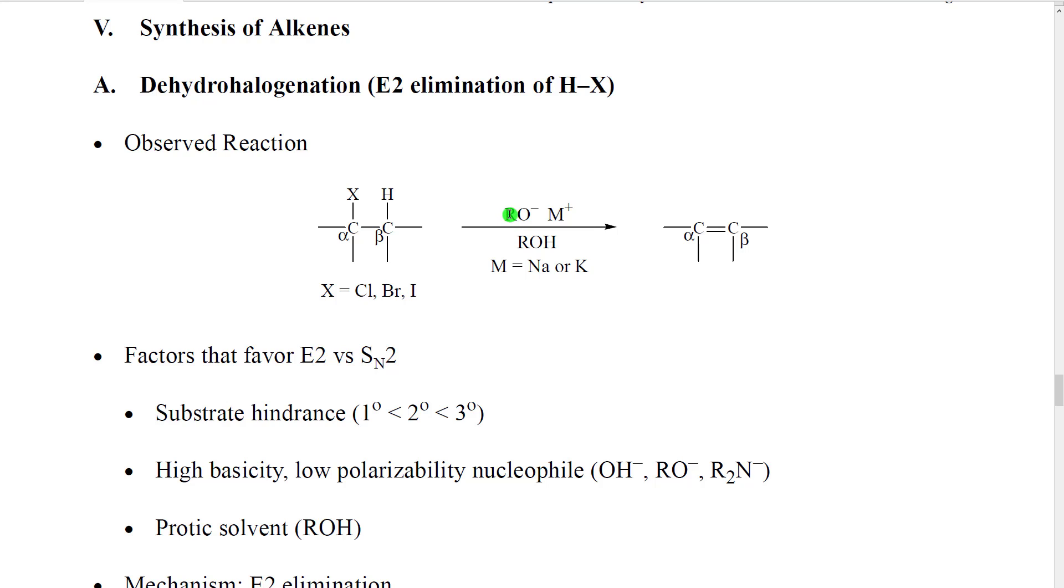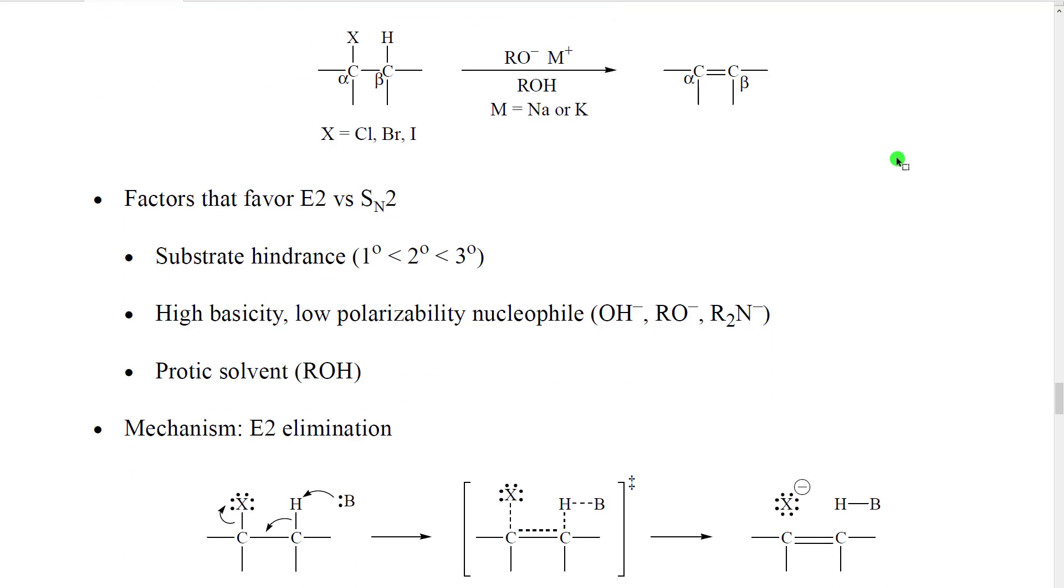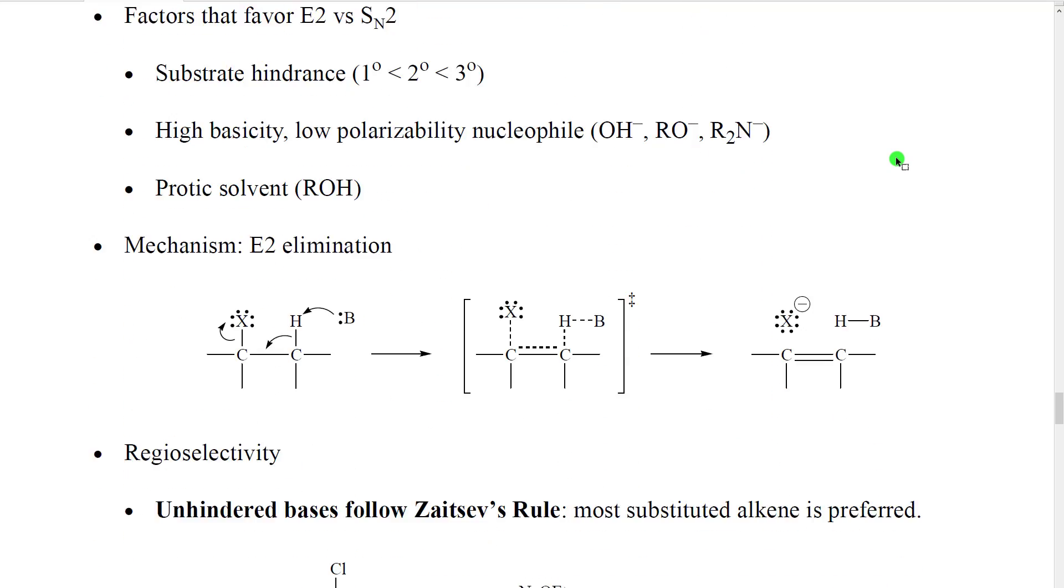We're going to put in a strong base in the form of carbon group O minus and then metal plus cation which will be a spectator ion. We're going to run this in an alcohol solvent where the carbon group of the alcohol is the same as the carbon group on the alkoxide, for example sodium O ethyl over ethyl OH.